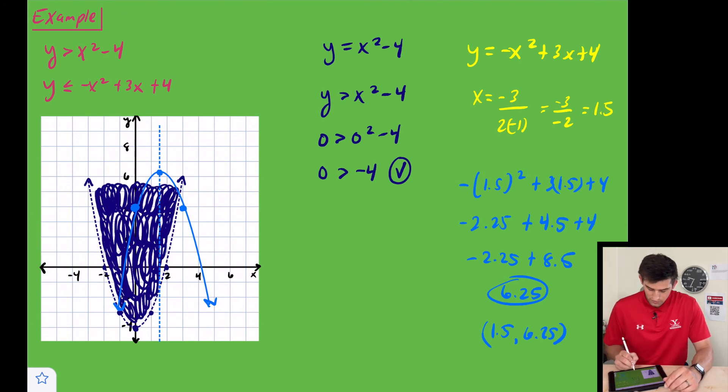Now let's take our test point. We can do the origin again, and now we're going to plug it into y is less than or equal to negative x squared plus 3x plus 4. So 0 is less than or equal to negative 0 squared plus 3 times 0 plus 4. So 0 is less than or equal to 4, and that would also be true. So we're going to shade inside this parabola as well.